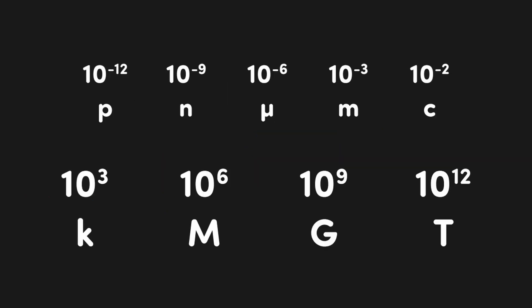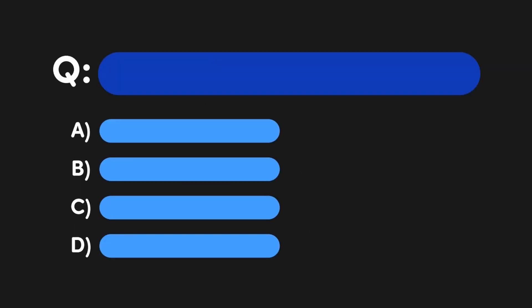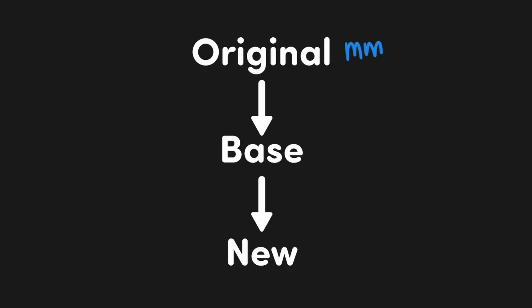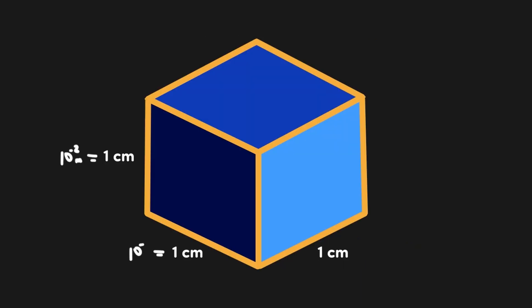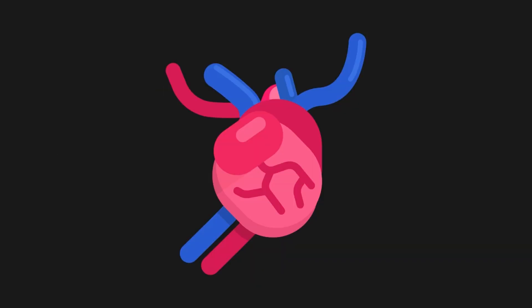To summarize: we learned how to quickly convert from SI units into scientific notation by replacing the SI prefix with the math it represents, useful both when setting up calculations and when looking for the correct answer choice. We can also convert from scientific notation into SI units via the inverse trick — first convert to base units, then add in the desired SI prefix and multiply by its inverse. Lastly, squaring or cubing must be applied to the SI prefix as well as the unit. If you enjoyed this video, leave a like and subscribe for more MCAT tips, and consider joining the Patreon via the link in the description.